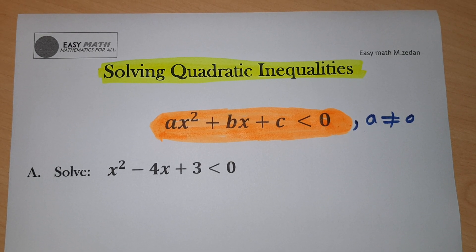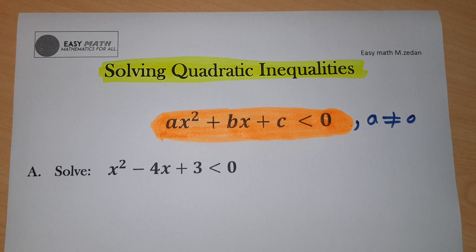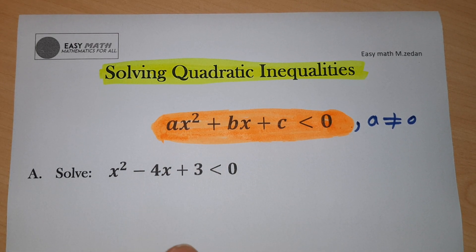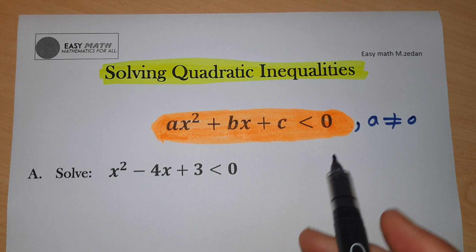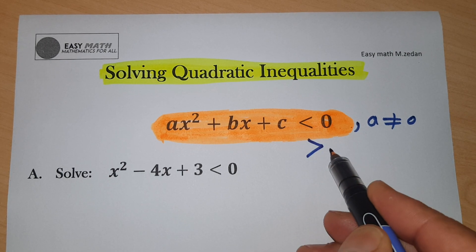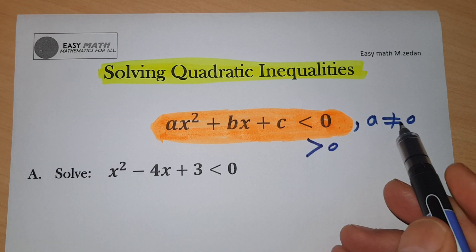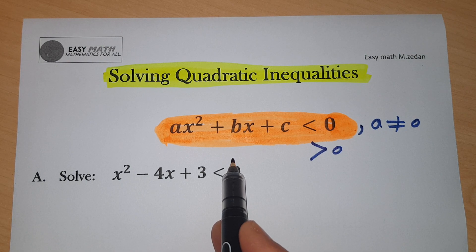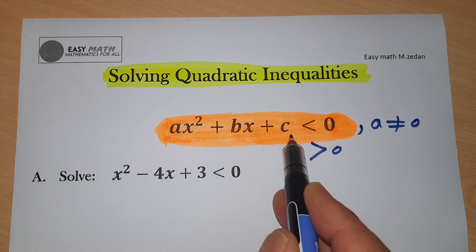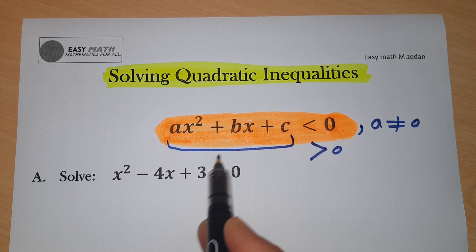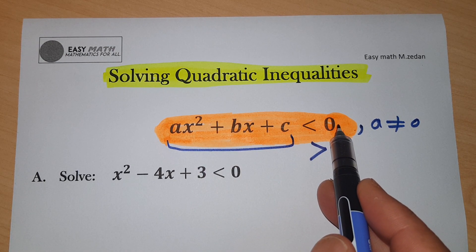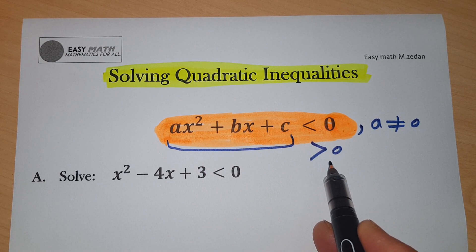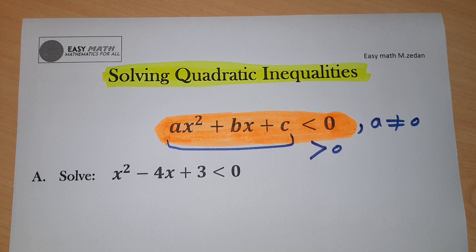Hello everyone. We're solving quadratic inequalities: ax² + bx + c less than zero, or bigger than zero, where a is not equal to zero. I want to find the intervals or values of x that make this expression less than zero (negative) or bigger than zero (positive).